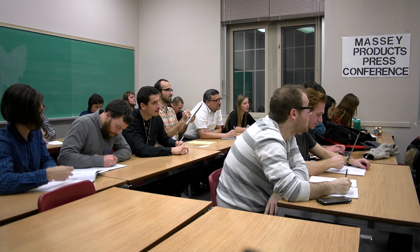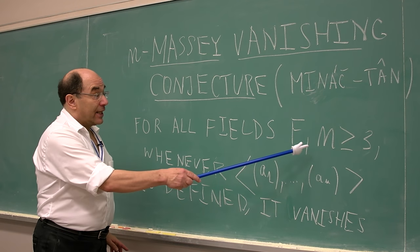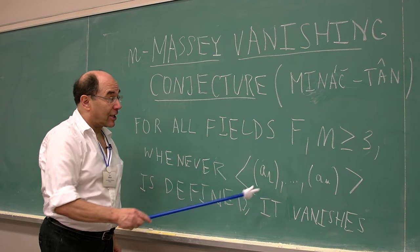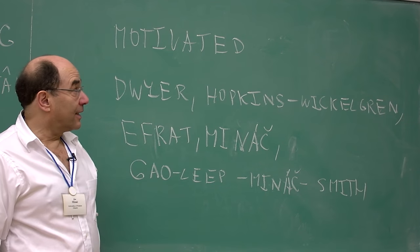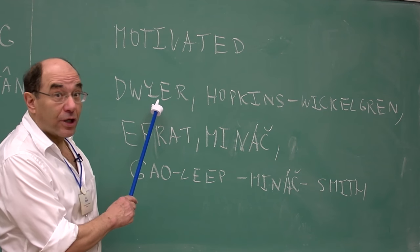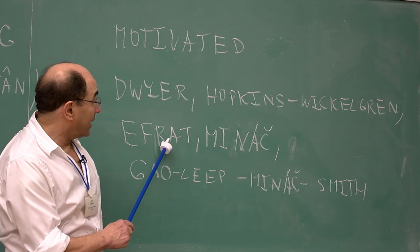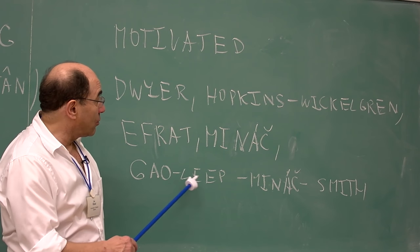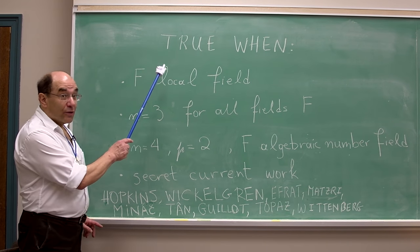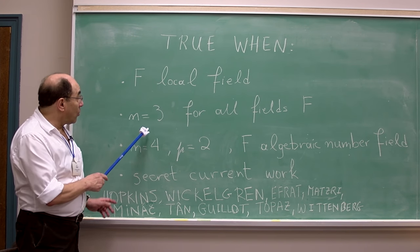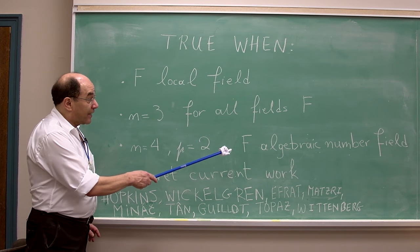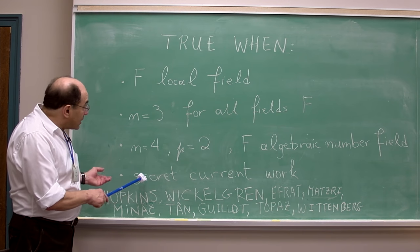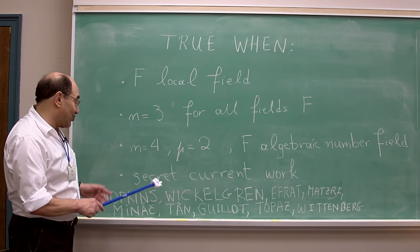In fact, we formulated n-Massey vanishing conjecture, which says that for all fields F, and any natural number n larger equals 3, whenever the Massey product is defined, then it vanishes. This conjecture was also motivated by previous work of Dwyer, Hopkins-Wickelgren, Efrat-Minac, Gille-Levine-Minac and Smith. This conjecture is true when F is a local field, or if n equals 3 for all fields F, in n equals 4 when p equals 2, and F algebraic number fields. And there is also some secret kind work, which I will not speak more.